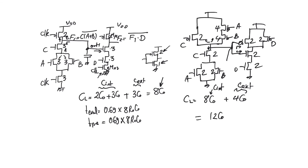Furthermore, as node F1 discharges and charges with delay, both PMOS and NMOS transistors of the next stage can be on simultaneously, creating a momentary path from supply to ground that makes the delay of gate 2 even longer. The same effect occurs in the current gate since all its inputs come from static CMOS gates. This is why dynamic CMOS is faster than static CMOS, even though we must manage two clock phases.